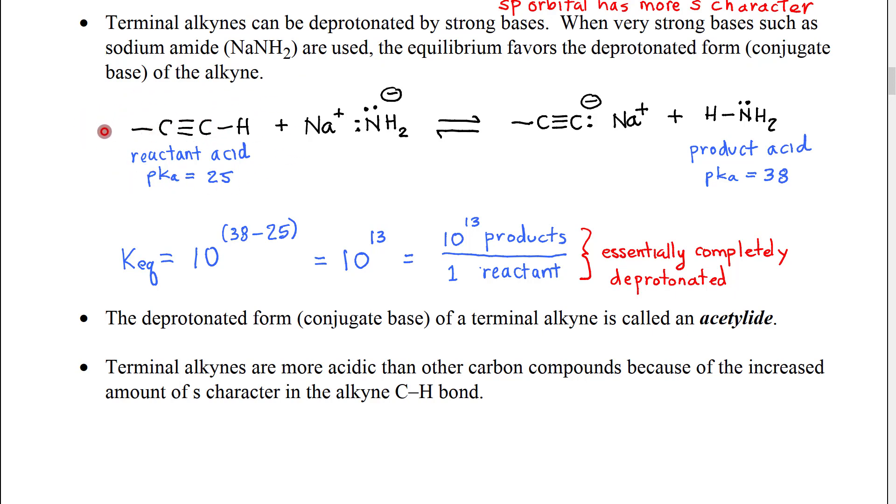Here's sort of a representative terminal alkyne, assuming we have some type of carbon group here. If we were to treat that with sodium amide, which I've written in its ionic form, the sodium ion would basically be a spectator,